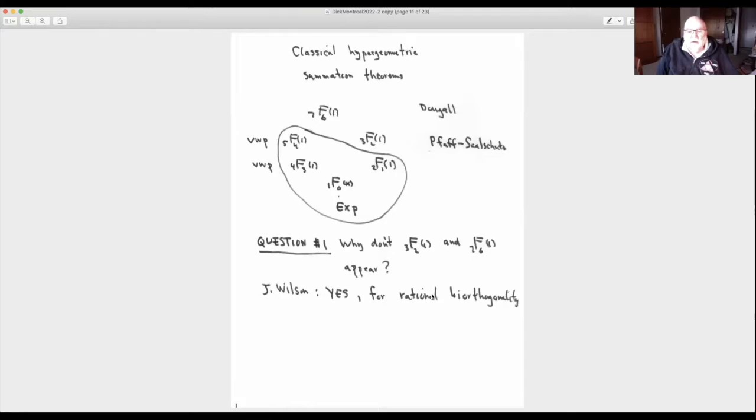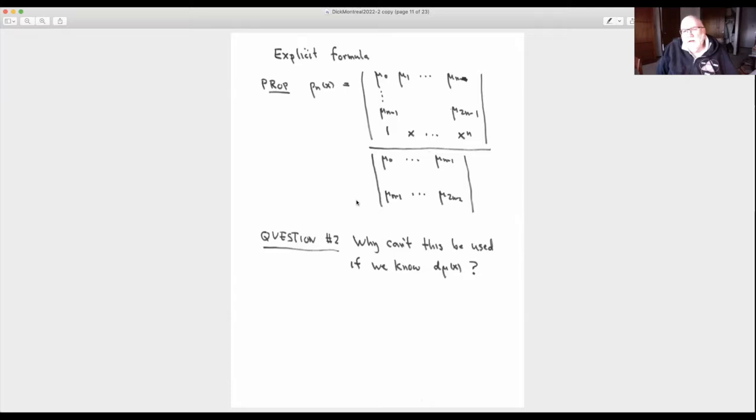So that's question number one that we had for Dick. Here's question number two. If you want to find the explicit formula for the polynomials, there's this determinantal quotient. What is this quotient of expanding the polynomial in these powers of x, then you have a bunch of linear relations. The linear functional applied to x to the k times p n is zero when k is less than n. So you need to solve these equations for the coefficients. That's Cramer's rule, solving a bunch of linear equations.